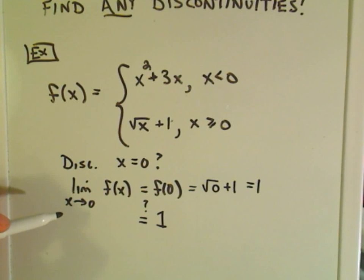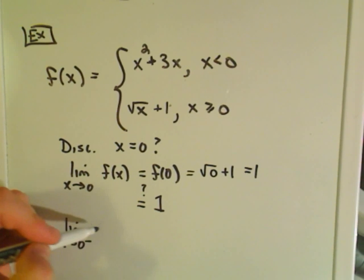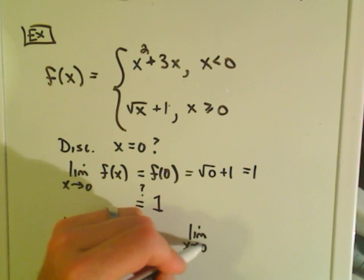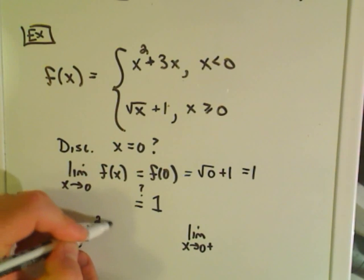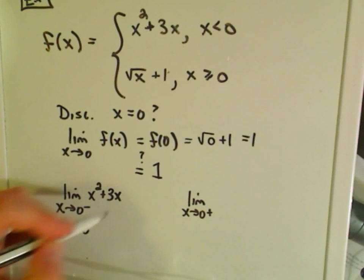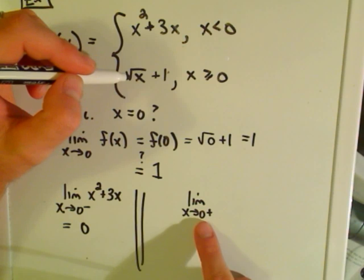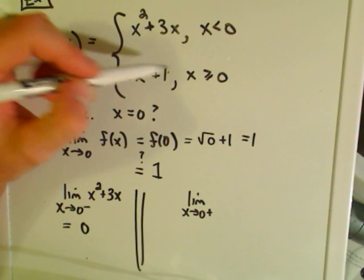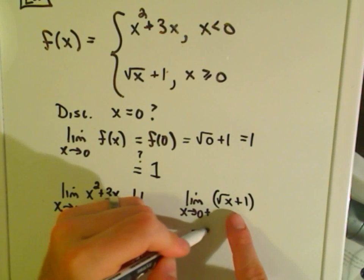We have to figure out if the limit as x approaches 0 equals 1. To do that, we look at one-sided limits. The limit as x approaches 0 from the left uses values of x less than 0, so we use x squared plus 3x. Plugging in 0 gives a limit of 0. The limit as x approaches 0 from the right uses the square root of x plus 1 portion, and plugging in gives a limit of 1.